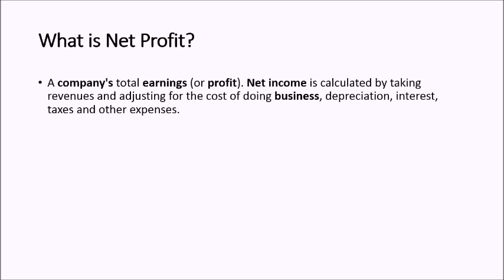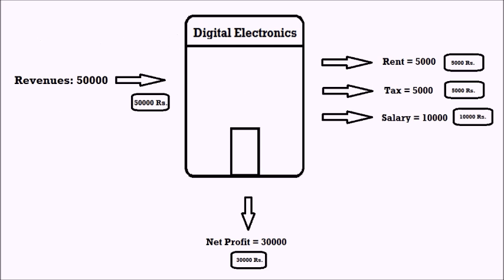Let's understand this with the help of an example. Let's assume the total revenue of Bob's business for this year is 50,000 rupees. From the 50,000 rupee revenue, let's assume he has to pay 5,000 rupees as rent, 5,000 rupees as tax, and 10,000 rupees for the laborers as salary. He will be left with 30,000 rupees — this is the net profit after subtracting total expenses from total revenue.